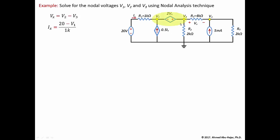The second trick is that this dependent voltage source is connected between v1 and v2. Whenever we have a voltage source — dependent or independent — between two nodes, we must use the supernode equations. We combine the two nodes as one closed surface where the sum of currents leaving that surface equals zero.